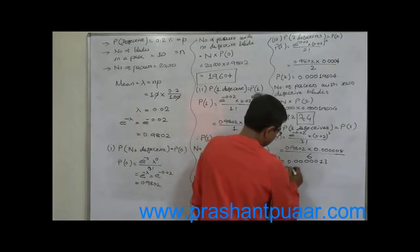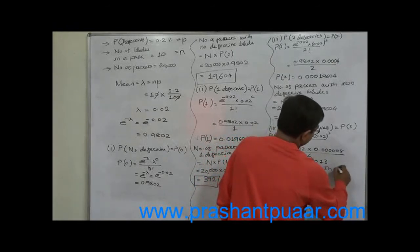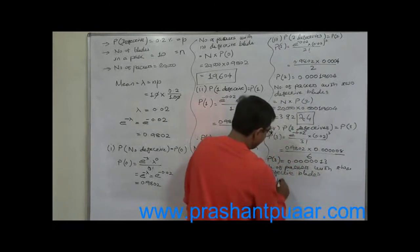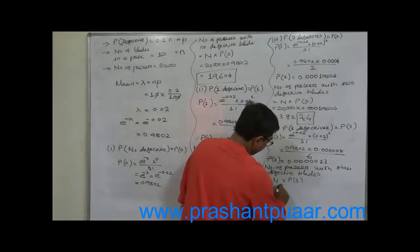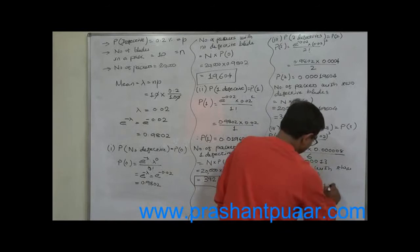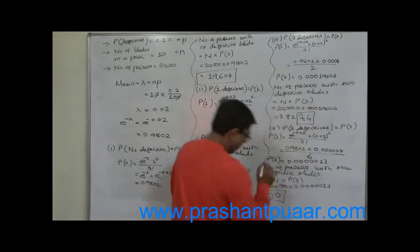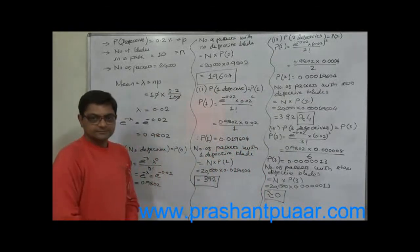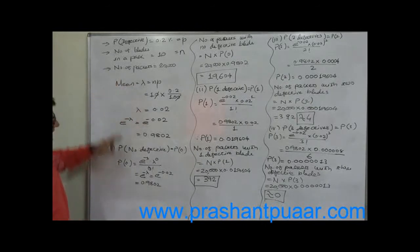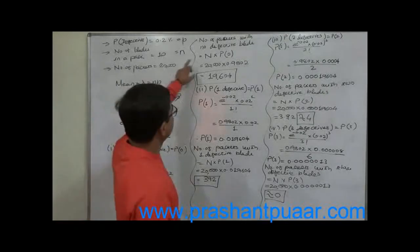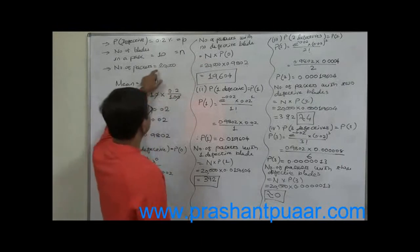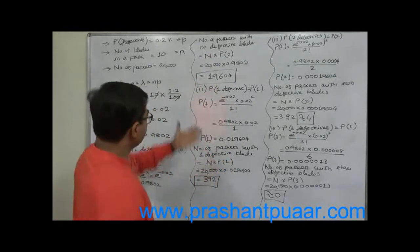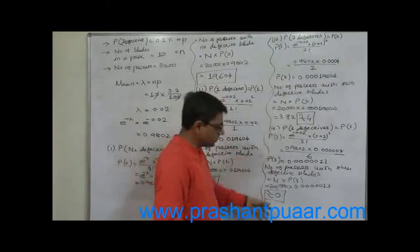The number of packets with three defective blades is total packets × P(3) = 20,000 × 0.0000013, which is approximately zero. We cannot expect any packets to have three defective blades. To summarize: the expected frequencies are 19,604, 392, 4, and 0 packets for 0, 1, 2, and 3 defective blades respectively. The logic is: approximate number of events = total number of packets × respective probability.